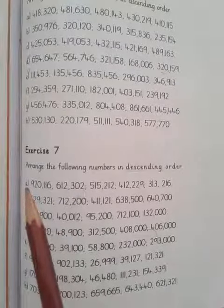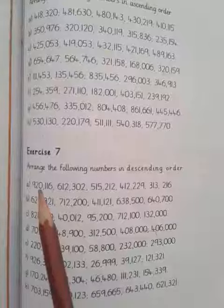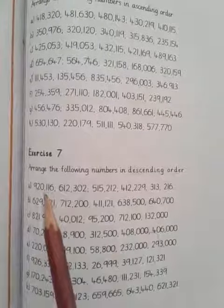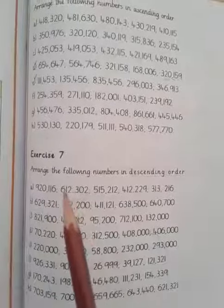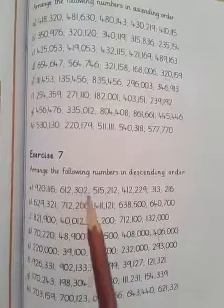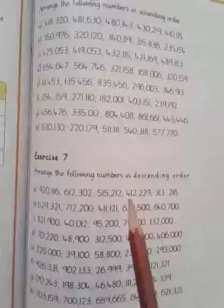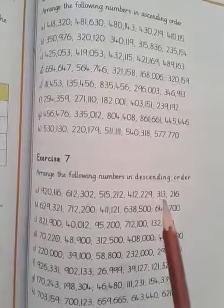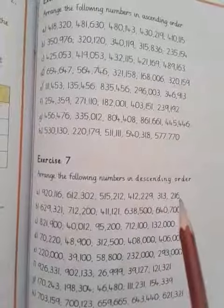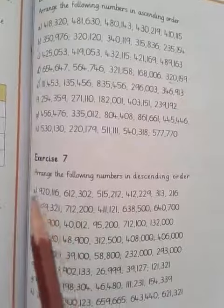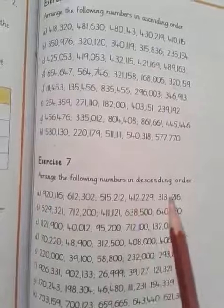Look at part A: 920,116; 612,302; 515,212; 412,229; 313,216. This is already arranged in descending order.